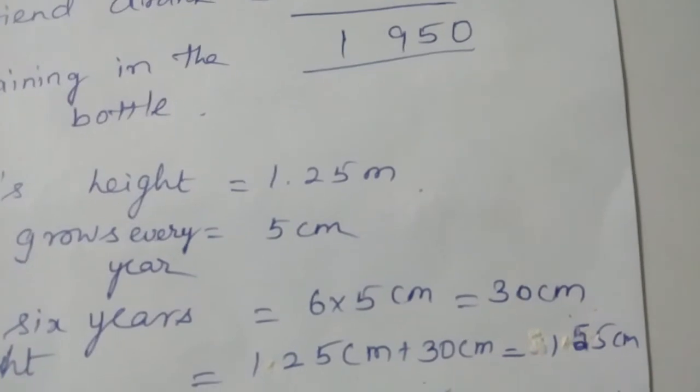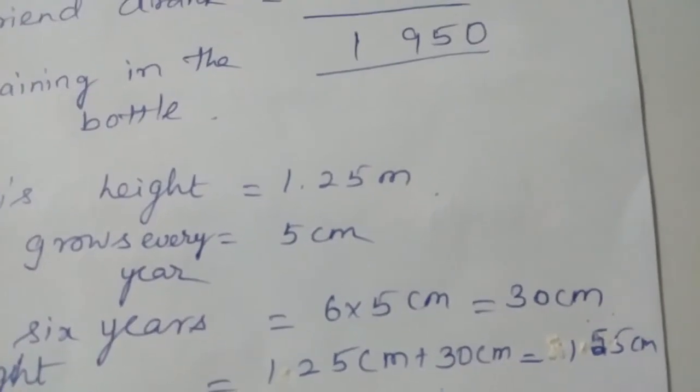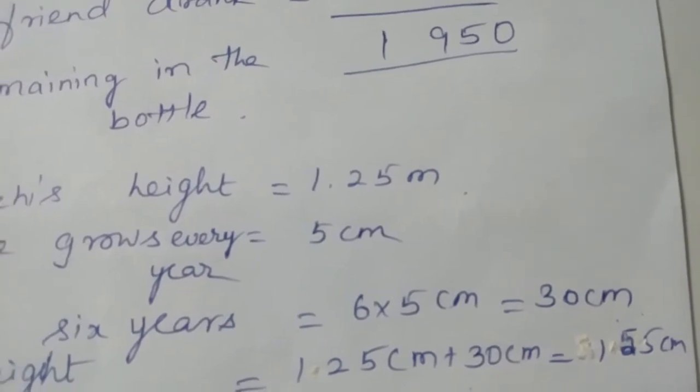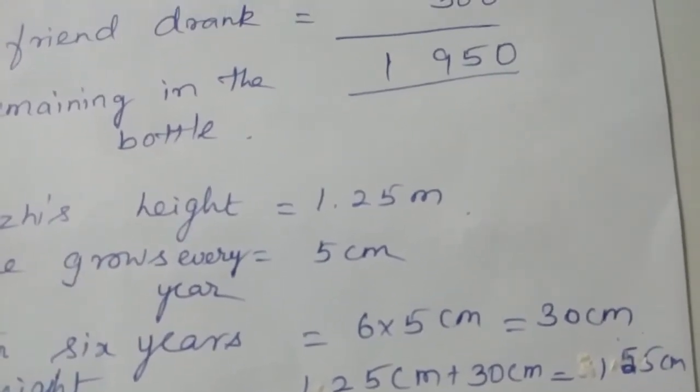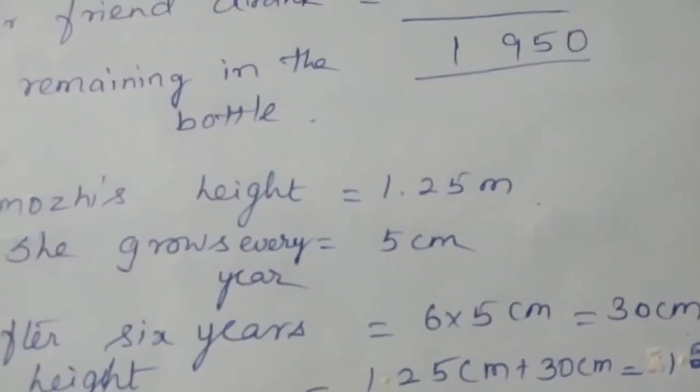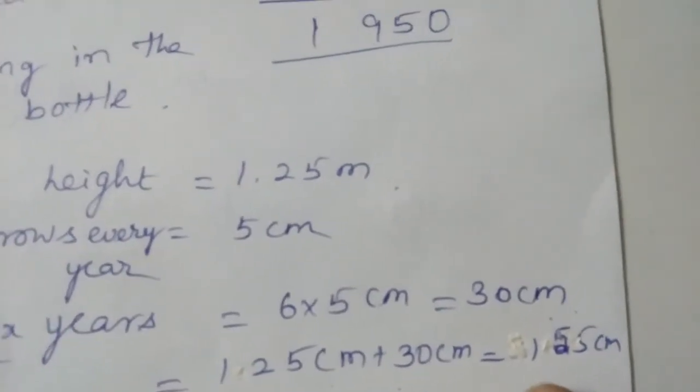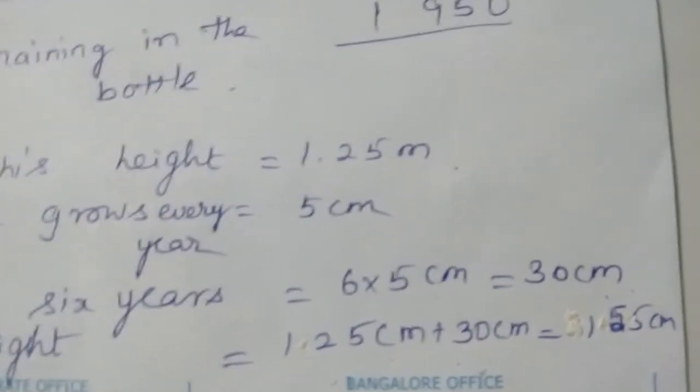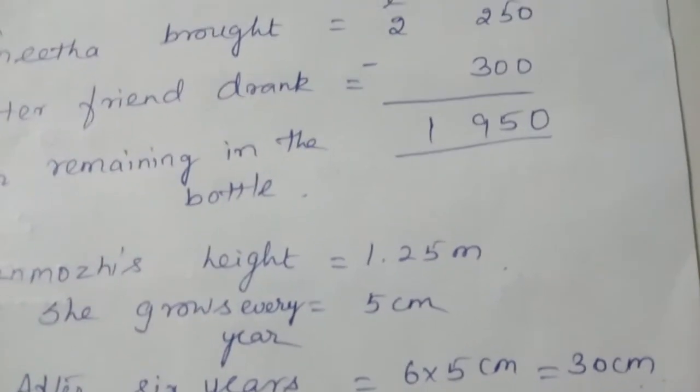The height is given in terms of 1.25 meter, so let us change that in terms of centimeter. 1 meter is equal to 100 centimeter, so you will automatically get the value as 125 centimeter. Plus 30 centimeter. When you are adding you will be getting 155 centimeter, which is the height after 6 years.